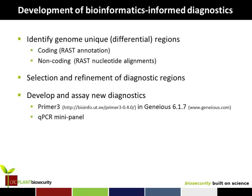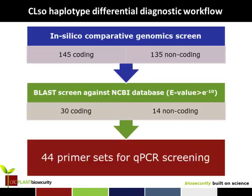I'll talk about the process and then run you through some of the assays. From our in-silico genomic screen we had 145 coding and 135 non-coding candidates — coding on the basis of the RAST annotations that Rebecca talked about. We put them through some filters to get down to 30 and 14 respectively — that's a BLAST screen looking for things that are similar or dissimilar in the databases — and ultimately we ended up with 44 sets for qPCR screening.